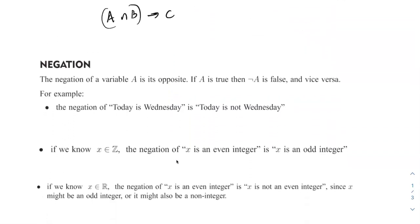Negation. So when we negate something, we do the opposite of what it is. If A is true, then not A is false, and vice versa. You're just going to do the opposite. They give an example here. The negation of today is Wednesday would be today is not Wednesday. We just negate it.